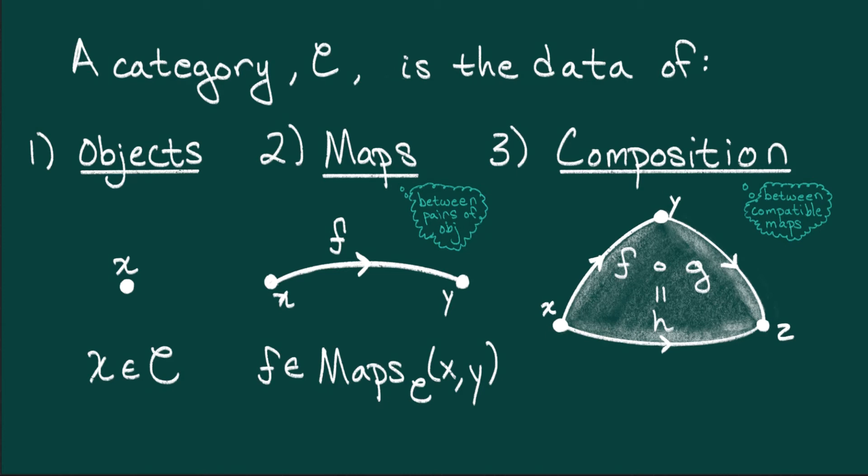This data must satisfy two properties, one existence and one uniqueness condition. The purpose of these conditions may seem opaque at first, but their role will become clearer as we progress.